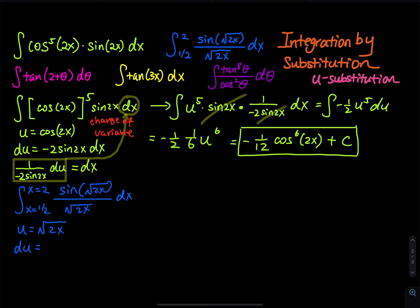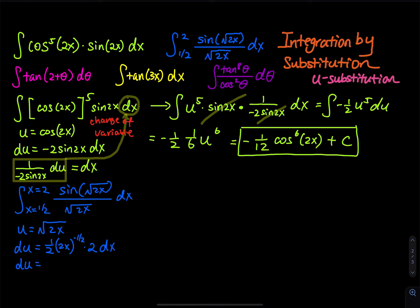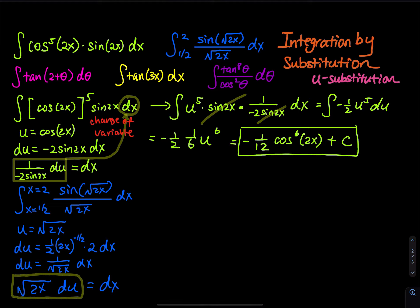Taking the derivative: du equals one-half times (2x)^(−1/2) times 2 dx by the chain rule. The 2s cancel, giving du equals 1 divided by square root of 2x dx, so square root of 2x du equals dx. We then perform the change of variable, substituting this expression for dx into the integral.